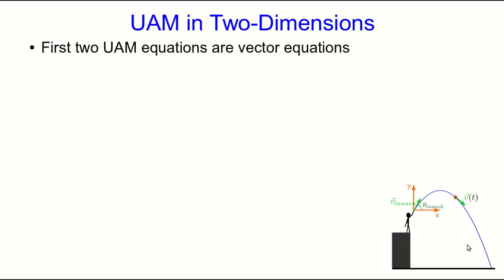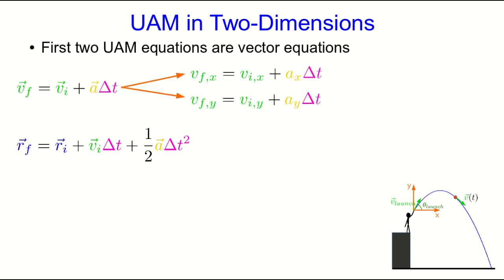So because the acceleration is constant, we'll get to use our old familiar uniformly accelerated motion equations, except that we're now in two dimensions, and so we have to use their full vectorial forms. Well, the first two UAM equations are vector equations. Here they are written as vector equations, and so the first one will separate out into two component equations, like so.